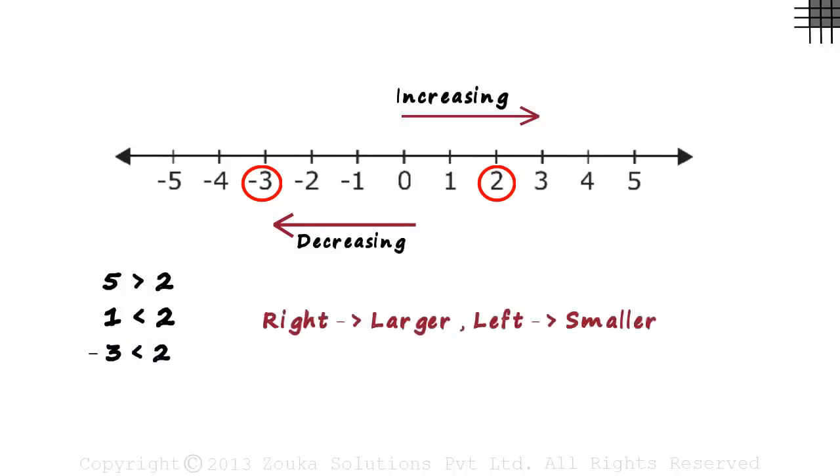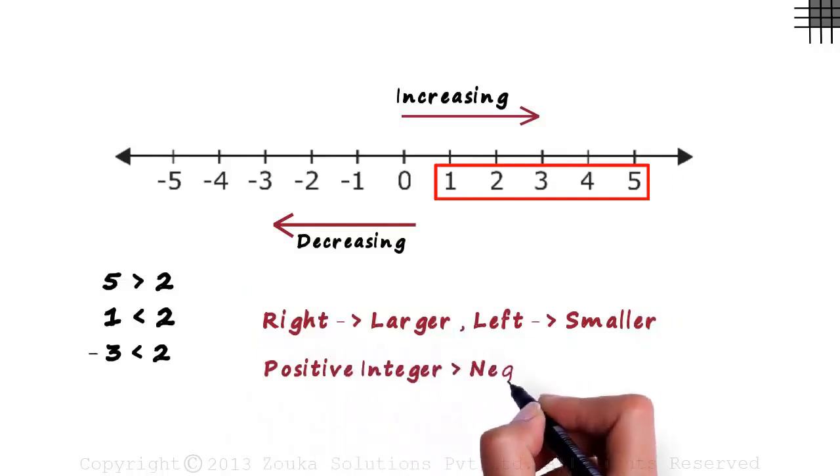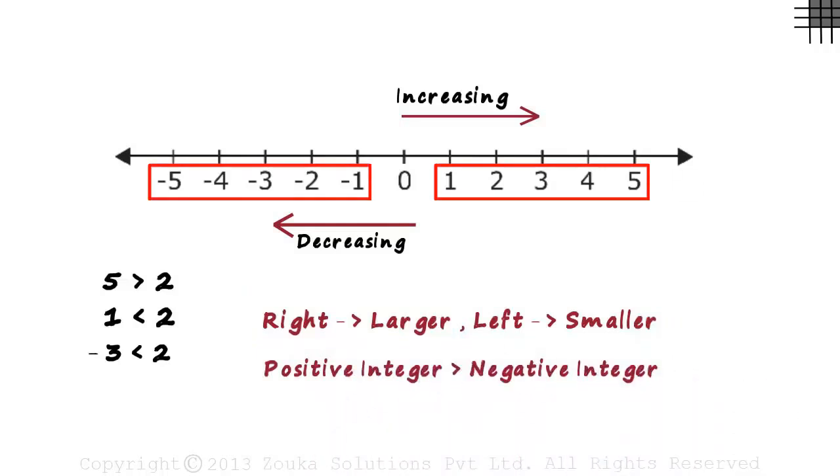Here's a very basic thing to remember. Right means larger and left means smaller. And this helps us understand a simple concept. Every positive integer is greater than any negative integer. It's because all positive integers are to the right of any and every negative integer.